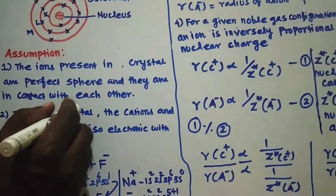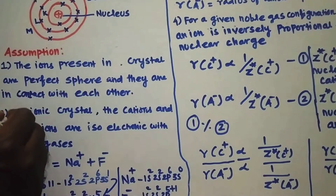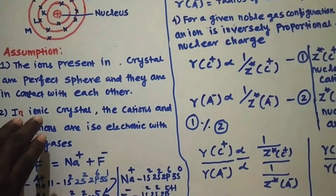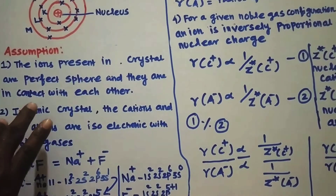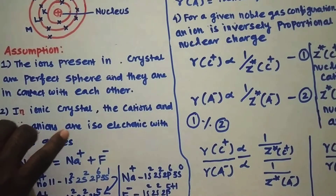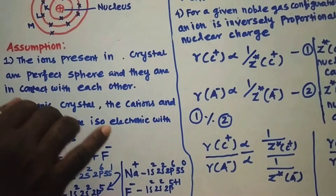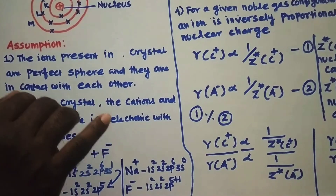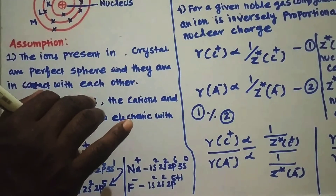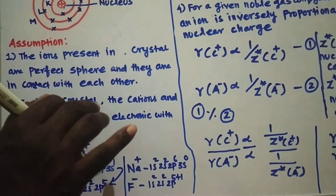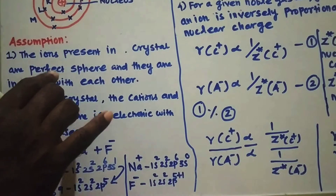Assumption number two: in ionic crystal, the cations and the anions are isoelectronic with noble gases. It means if an ion has a positive or negative charge, its electronic configuration is isoelectronic with the electronic configuration of the noble gases. That is the key point.